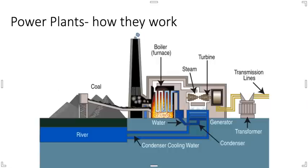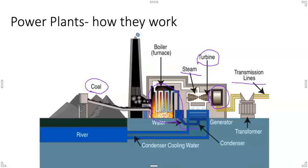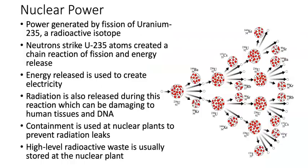Let's review how power plants work, starting with coal-fired power plants. Coal enters the plant and is burned in a furnace. That heat vaporizes water in pipes, turning it into steam. The steam spins a turbine, and the turbine's mechanical energy allows a generator to produce electricity that is sent out to the community. Nuclear power plants are similar in that they also use a turbine and generator producing steam, but use a different material to produce the heat needed to create that steam.